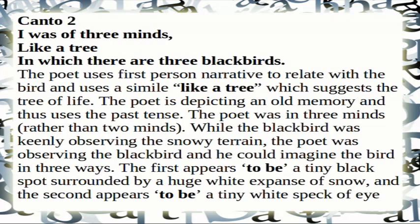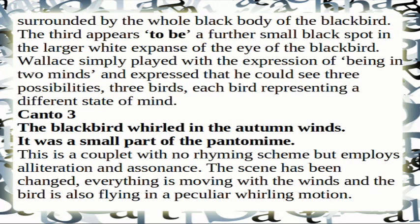Canto 2: 'I was of three minds, like a tree in which there are three blackbirds.' The poet uses first-person narrative to relate with the bird and uses a simile — like a tree — which suggests the tree of life. The poet was in three minds rather than two: the first is the tiny black spot in a huge white expanse; the second is the tiny white speck of the eye surrounded by the whole black body; the third is a further small black spot in the larger white expanse of the bird's eye — three birds, each representing a different state of mind.